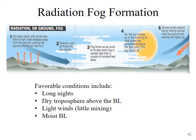The favorable conditions for radiation fog are long nights, a dry troposphere above the boundary layer, moisture within the boundary layer (so it can be cooled to the dew point), and light winds to prevent mixing — because mixing will eliminate any temperature inversion that starts to form at ground level.